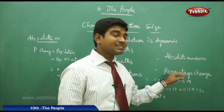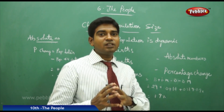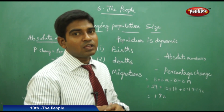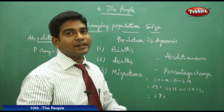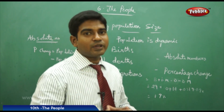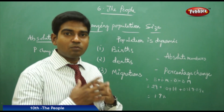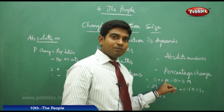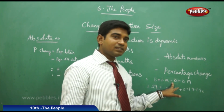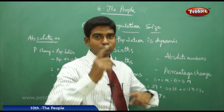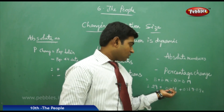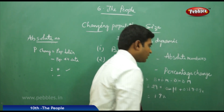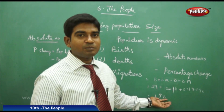The other type is percentage change. The formula is: births plus in-migrants minus deaths minus out-migrants. For example, if 29 people are born per 1000, 10 people die, and there are no migrations, then 29 minus 10 gives 19. The percentage calculated is 1.9%, representing the rate of population change for that period.